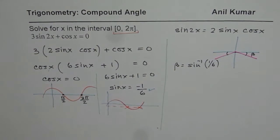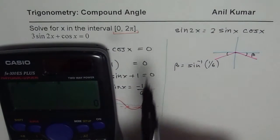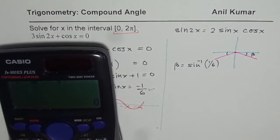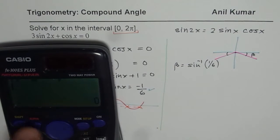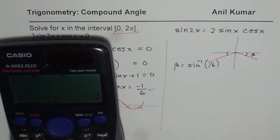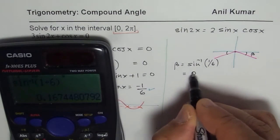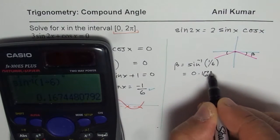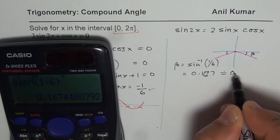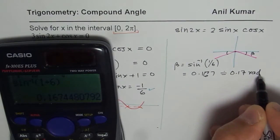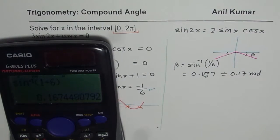We say beta equals to sin inverse of 1/6. Right. Acute angle has to be positive. So we need to use our calculator that to in radiance. Right. Because 2π. So in radiance, let us change it to radiance which is 4 option. And now we will do sin inverse of 1 divided by 6 within brackets. So we get beta value as equals to 0.167. Okay. Or we can write, okay. So we will approximate this to 0.17. Okay. Radiance.